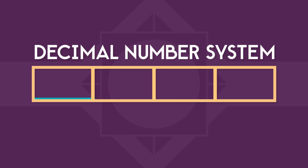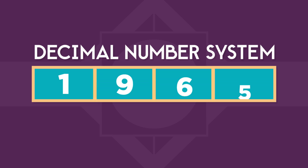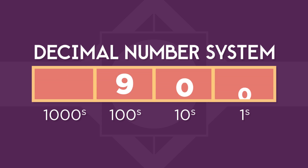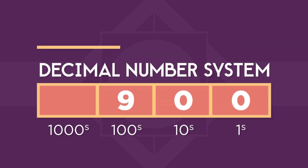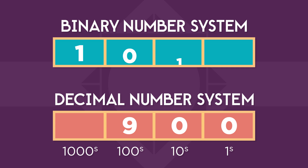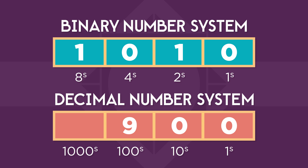In the decimal number system we're all used to, each position in a number has a different value. There's the one position, the ten position, the one hundred position, and so on. For example, a nine in the one hundred position is nine hundred. In binary, each position also carries a value, but instead of multiplying by ten each time, we multiply by two. So there's the one's position, the two's position, the four's position, the eight's position, and so on.